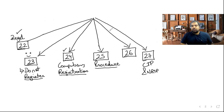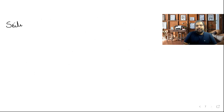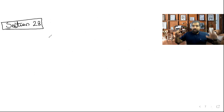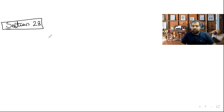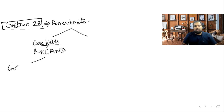Sections 28, 29, 30 remain. Section 28: Amendments to registration. It's human to make changes — address, entity name, phone, email on the registration certificate may change. Two types of amendments: Core fields and non-core fields. Core fields shortcut 'CAN': Constitution change (partner added/removed), Address change (principal or additional place), Name change. For core fields, apply within 15 days; the GST officer reviews and approves, then issues a new registration certificate.